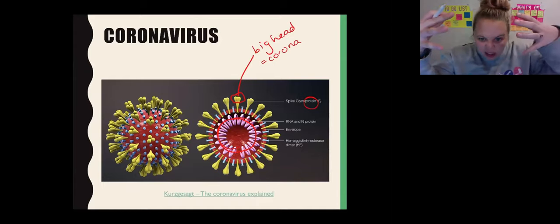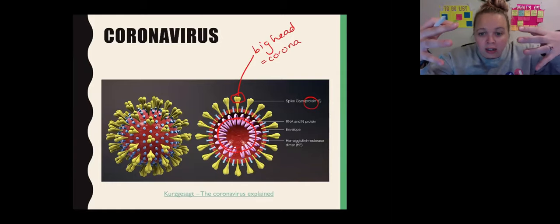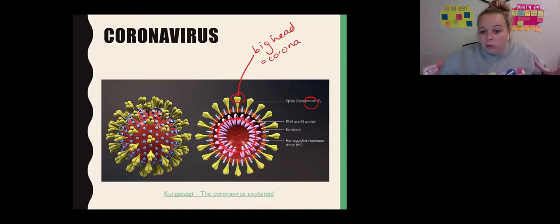If you ever see a photograph of the sun and you see a little glowing ring around it, we call that the corona, or the outside of the sun is called the corona. And because these coronaviruses have these big heads on the ends of their protein coat, that's why we call them that, because they have these big heads and the word for that is corona. So that's why we call them a coronavirus.